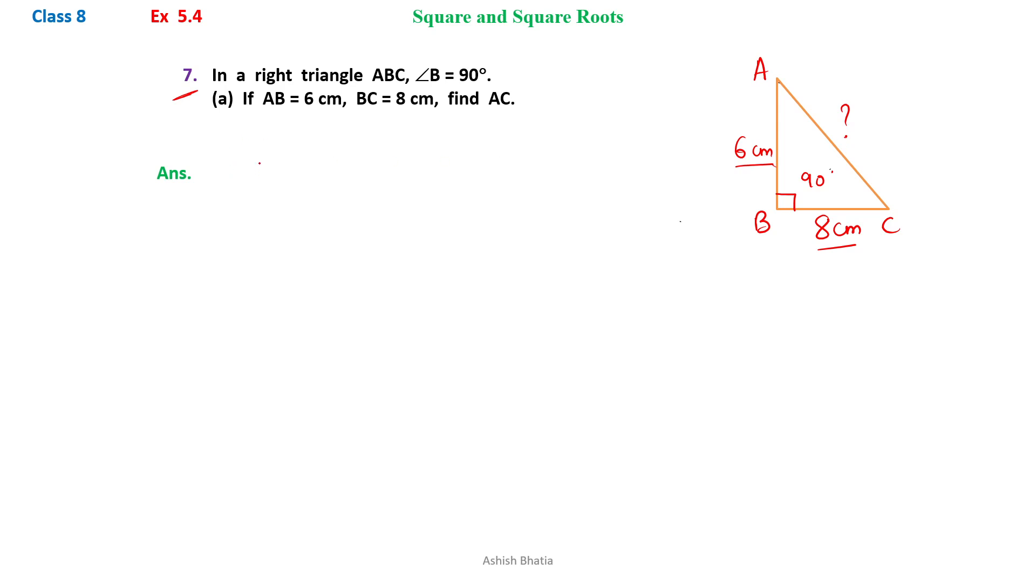As we can see it is a right angle triangle, so in a right angle triangle we use Pythagoras theorem. By Pythagoras theorem we can say that hypotenuse square is equal to perpendicular square plus base square.